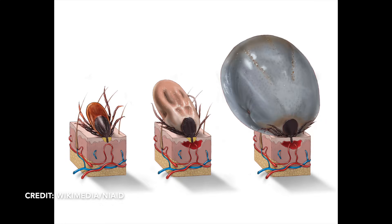Another problem with identifying ticks is that they look different depending on how much they've had to eat, and will balloon up if they've been on there for multiple days. This is an Ixodes tick, and you can see it looks completely different depending on where it is in its feeding cycle — it's going to be hard to tell the color if it's been on there a long time, and that makes identification difficult. So prevention of all tick bites and doing regular tick checks is going to be key in preventing Lyme disease.